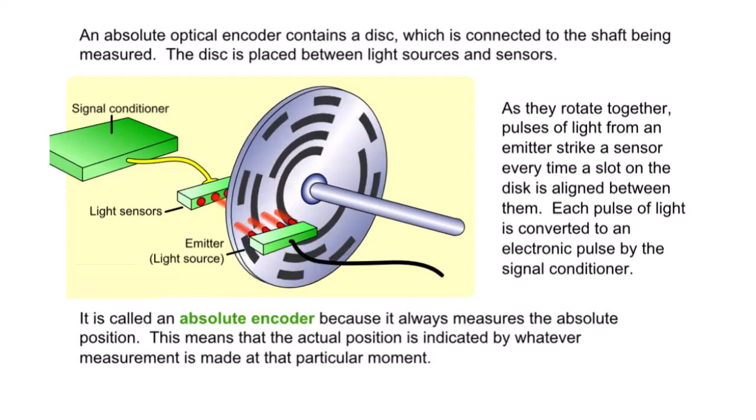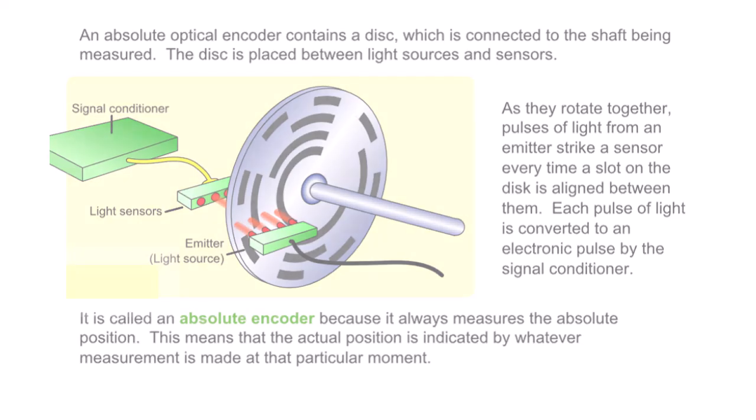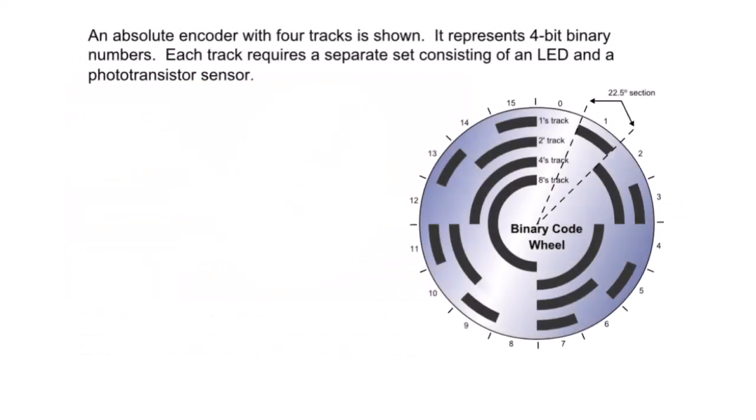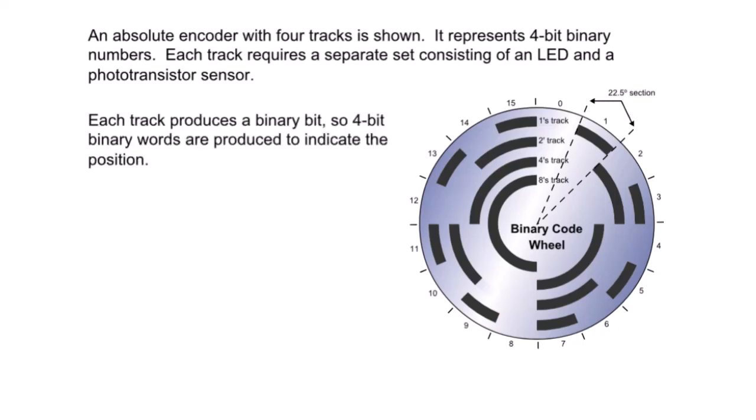An absolute encoder with four tracks is shown. It represents four bit binary numbers. Each track requires a separate set consisting of an LED and a photo transistor sensor. Each track produces a binary bit, so four bit binary words are produced to indicate the position.